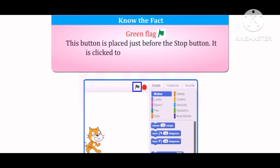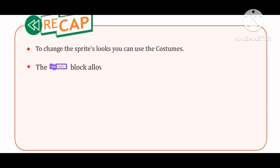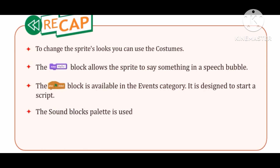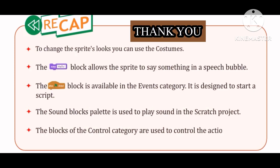Students, know the fact. Green flag: This button is placed just before the Stop button and is clicked to execute or run the script. Let us take a recap of this lesson. To change the sprite's looks, you can use costumes. The Say block allows the sprite to say something in a speech bubble. The When clicked block is available in the Events category and is designed to start a script. The Sound Blocks palette is used to place sound in the Scratch project. The blocks of the Control category are used to control the actions of the sprite.